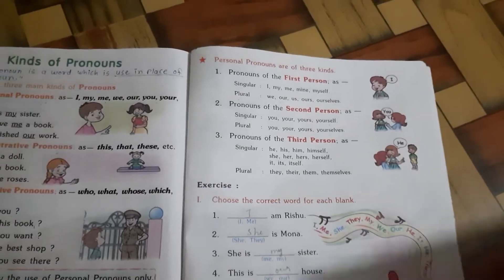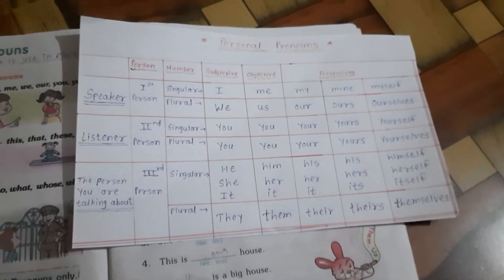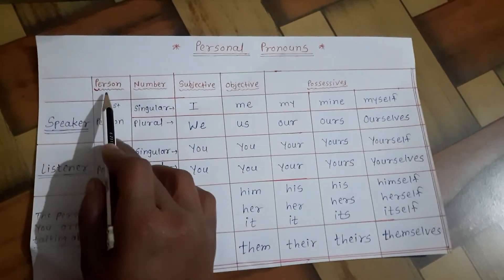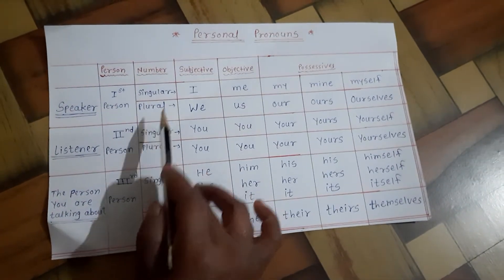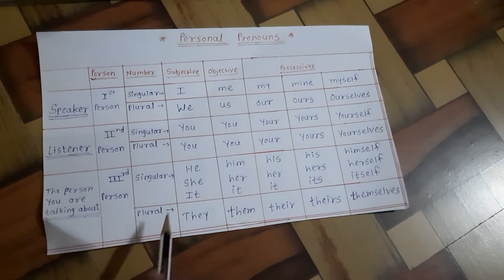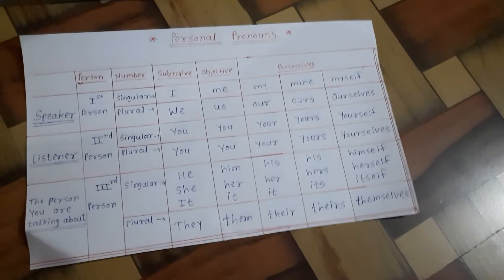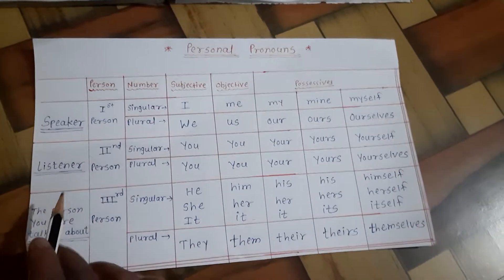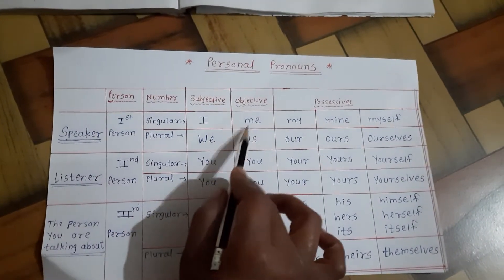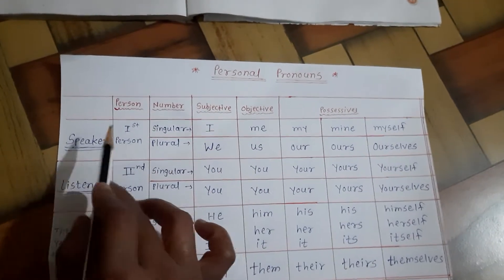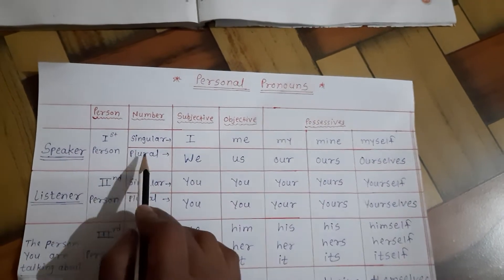Now let us look at this table of personal pronouns. The table shows person — first, second, third — and number — singular and plural. For first person singular: I, me, my, mine, myself. Plural: we, us, our, ours, ourselves. You should remember this chart very carefully and also make this chart yourself.